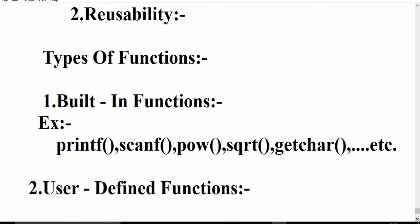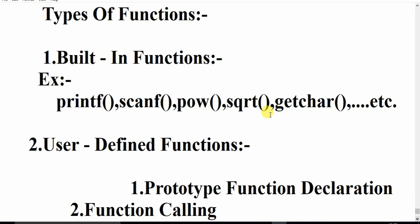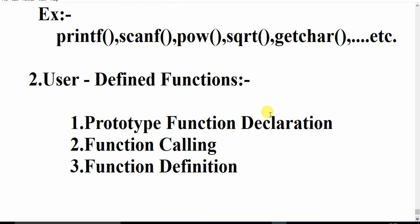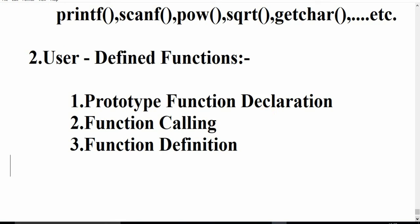While defining user-defined functions, you must follow some rules according to ANSI standardization — the American National Standard Institute. These rules are: first, prototype function declaration; second, function calling mechanism; and third, function definition. These three rules must be followed by the user while defining functions.